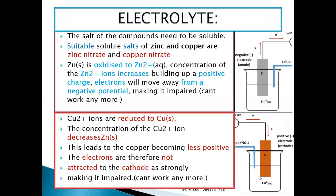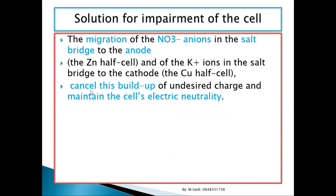When electrons arrive at the cathode and react with Cu²⁺ ions, the positive charge at the cathode is reduced. Potassium cations (K⁺) from the salt bridge migrate to the copper side to restore the positive charge there, allowing the terminal to continue attracting more electrons. This cancels the buildup of undesirable charge, maintaining the cell's electrical neutrality.